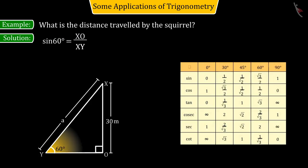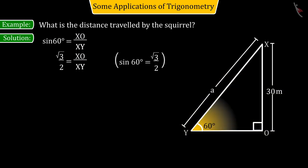In the left side, there is sine 60 degrees whose value is equal to the square root of 3 by 2. And on the right side, with the help of the given information, keeping the values of XO and XY as 30 and A respectively.